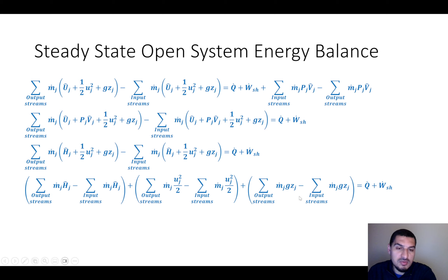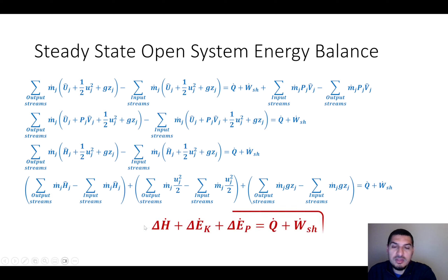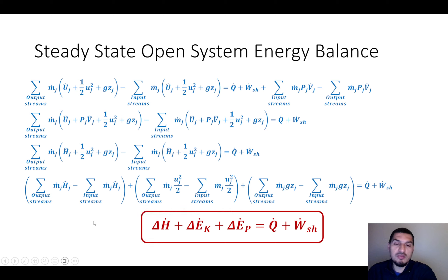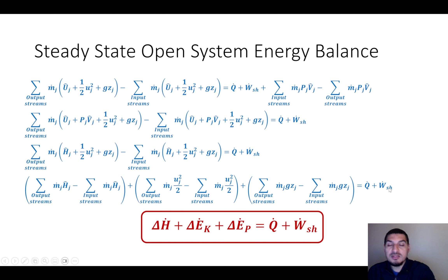We can write this in a more compact form: delta H plus delta kinetic energy plus delta potential energy equals Q plus shaft work. This equation is the general energy balance equation for open systems at steady state.